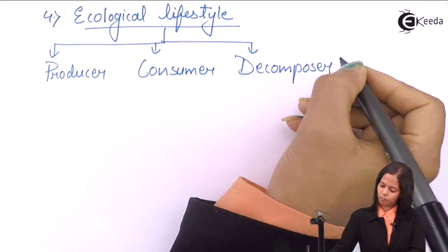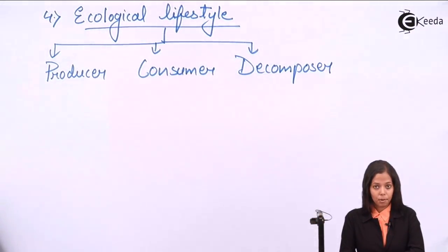Plants are producers, bacteria and some fungi are decomposers, and rest all are consumers in our ecosystem.